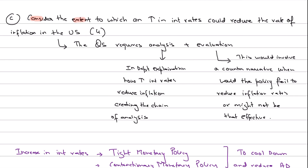Part C says: consider the extent to which an increase in interest rates could reduce the rate of inflation in the US. Remember that whenever questions say 'assess whether,' 'assess to what extent,' 'consider to what extent,' or 'discuss whether,' all these require you to evaluate the narrative — give an in-depth explanation of how an increase in interest rates could reduce inflation, creating that chain of analysis, and then evaluate that narrative with a counter-argument about when it might not work.